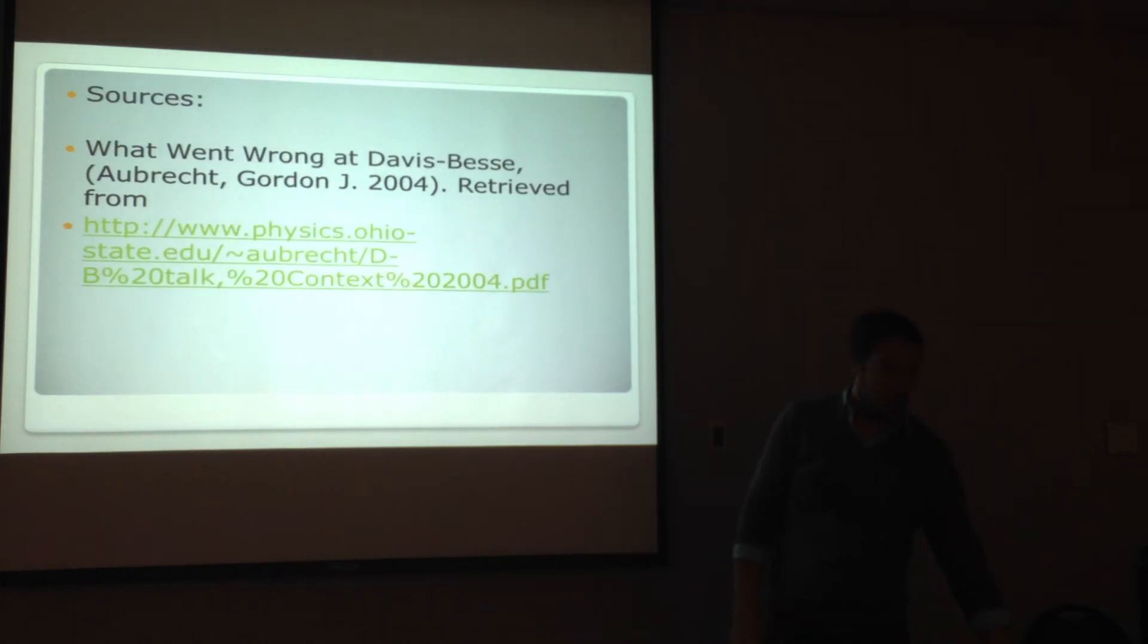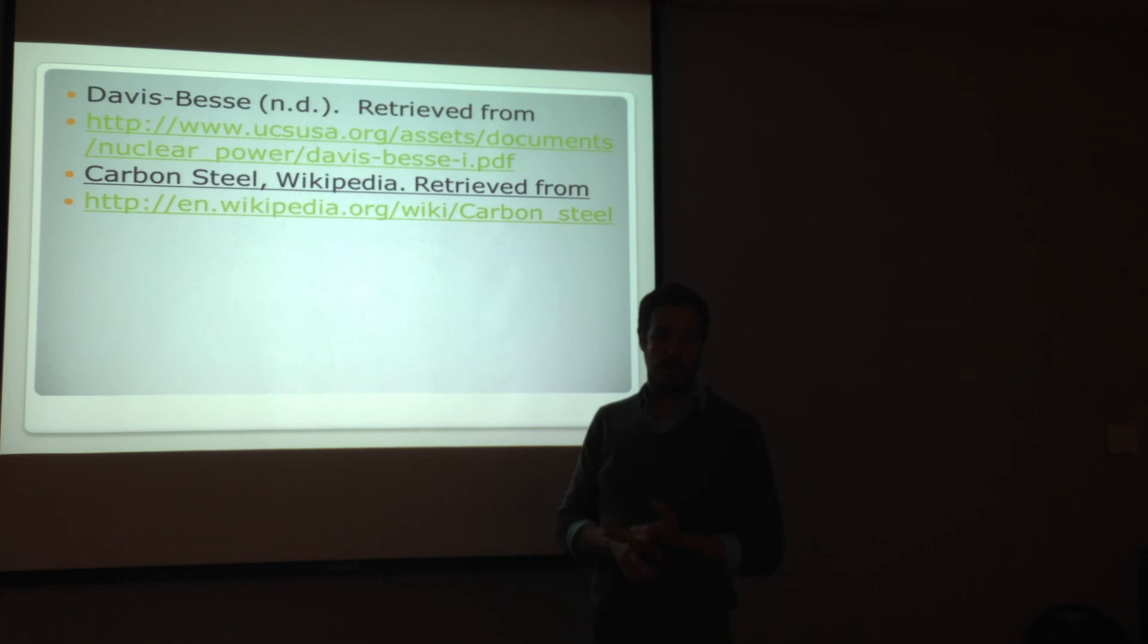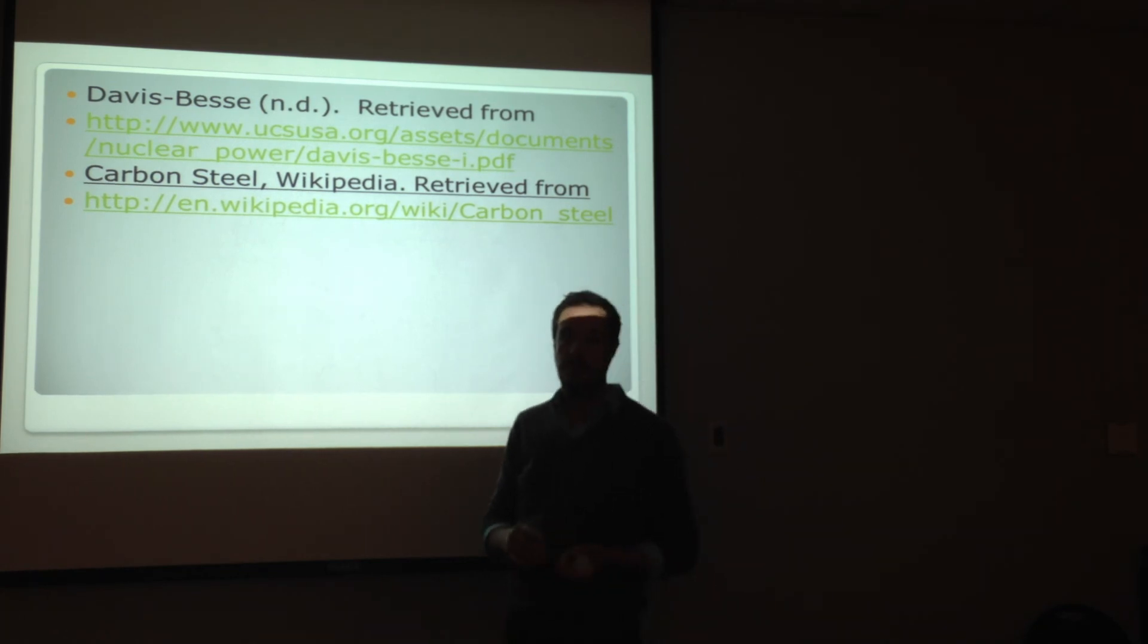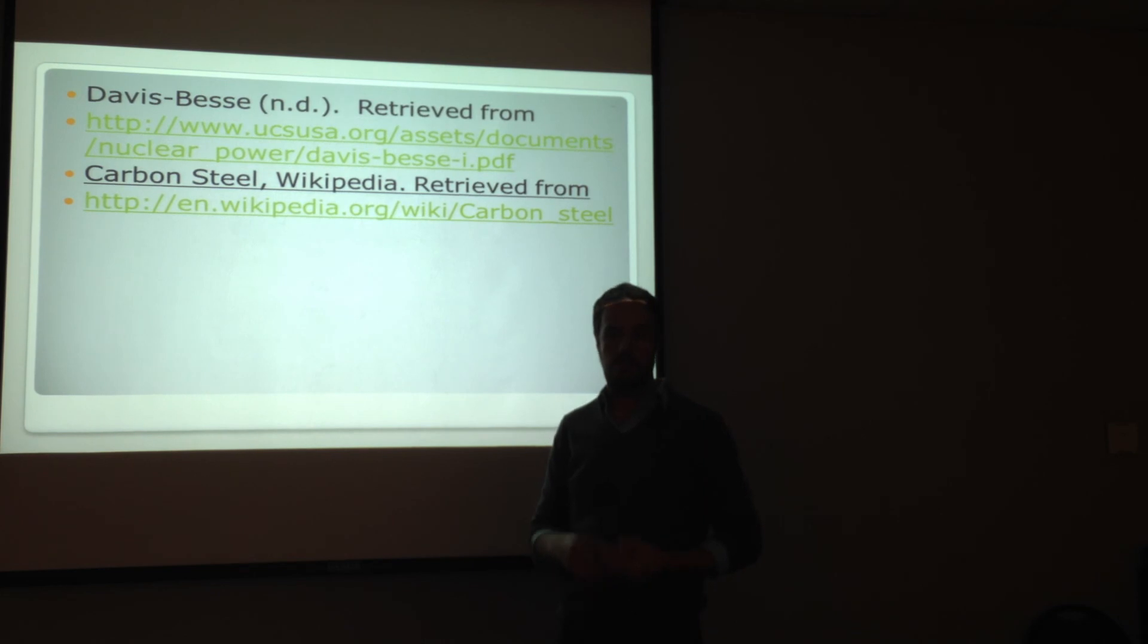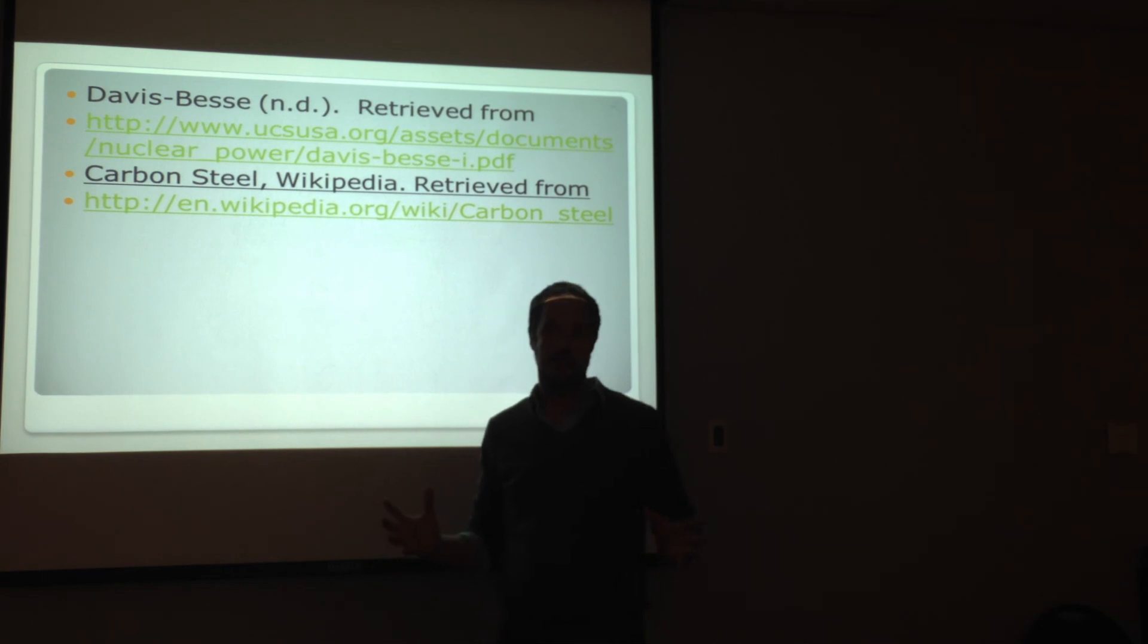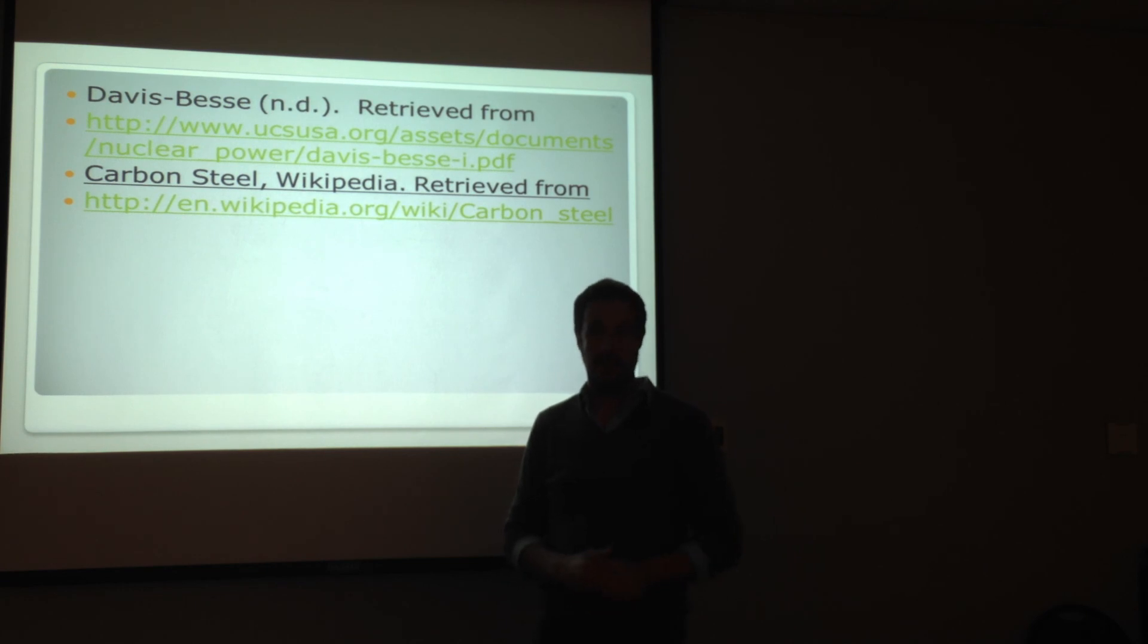And, also, what was discovered was it's great to have a strong reliance on a strong program such as the boric acid corrosion control program. But, unless you're using your mind and thinking outside the box when something doesn't seem right, like the large amounts of boric acid deposits they were finding in the containment air cooler systems and in the filters, and knowing that there weren't any primary leaks from the usual suspects, nobody thought, well, where might this be coming from and why are we seeing this? So, a lot of things were learned from this. Hopefully, you learned something.